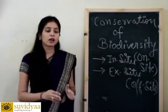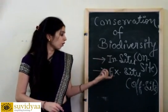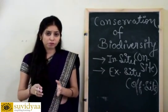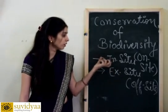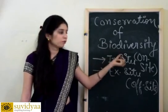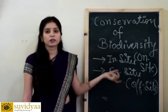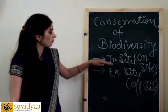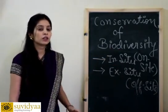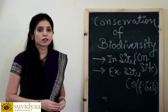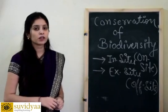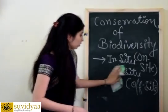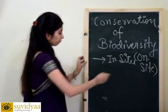When we talk about in-situ conservation, the species are protected at their natural habitat. In ex-situ conservation, the species are kept in a particular area or laboratory where they are conserved and protected. In in-situ conservation, animals live in their natural habitat, whereas in ex-situ conservation, species are taken to a particular area where they are conserved. Examples of in-situ conservation include national parks, wildlife sanctuaries, and biosphere reserves.